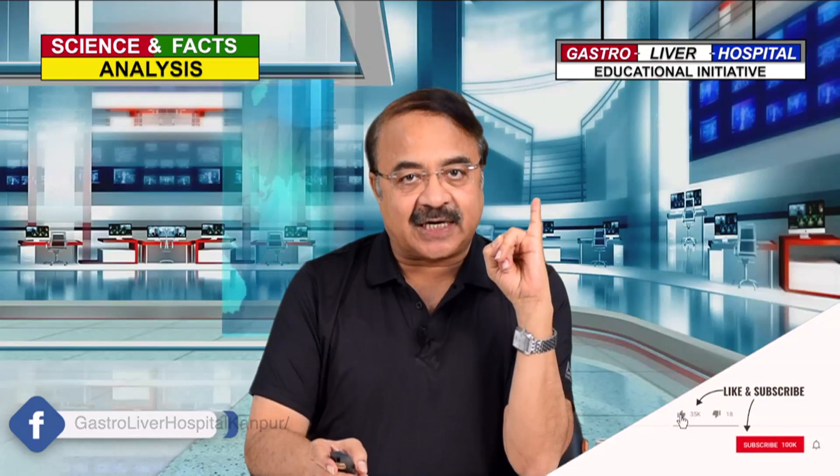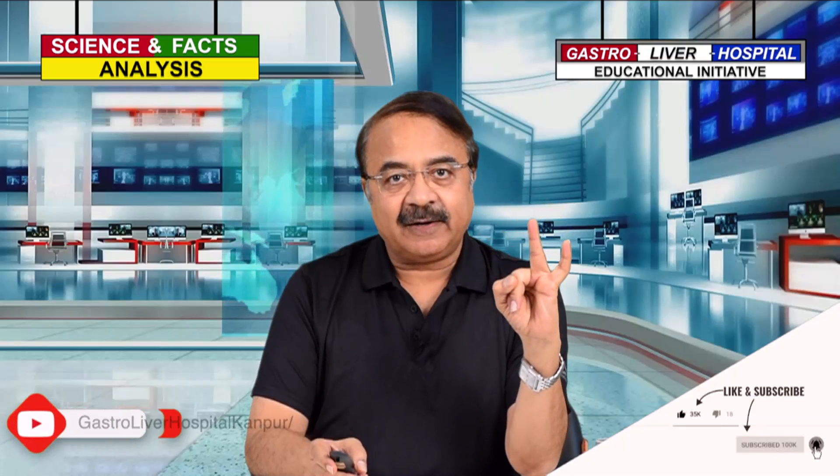आप जानते हैं, Fats इतने तरह के होते हैं. Number 1 is the Trans Fat, Number 2 is the Saturated Fat, Number 3 is the Poly Unsaturated Fat, Number 4 is the Mono Unsaturated Fat.